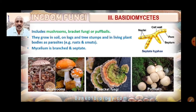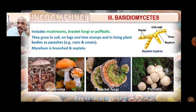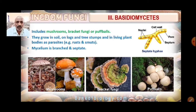The next group is Basidiomycetes, which includes well-known mushrooms, bracket fungi, and puffballs. They grow in soil, on logs, on tree stumps, and even on living plants as parasites. Rust and smuts are examples of parasitic Basidiomycetes that grow on living plants.